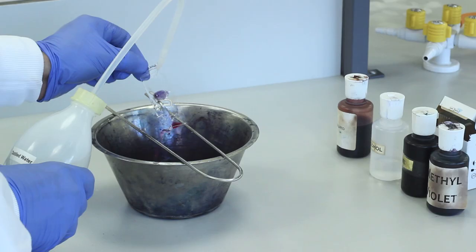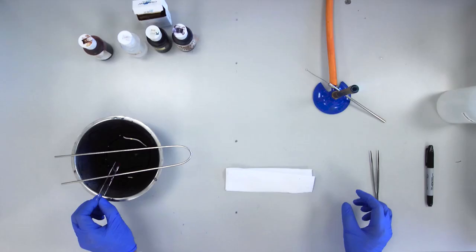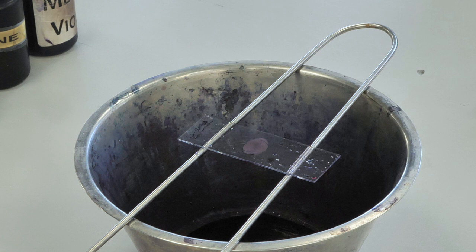Tap off any excess water against the edge of the staining bowl or onto a piece of tissue paper. Leave to air dry until fully dried. The slide is now ready for examination under the microscope.